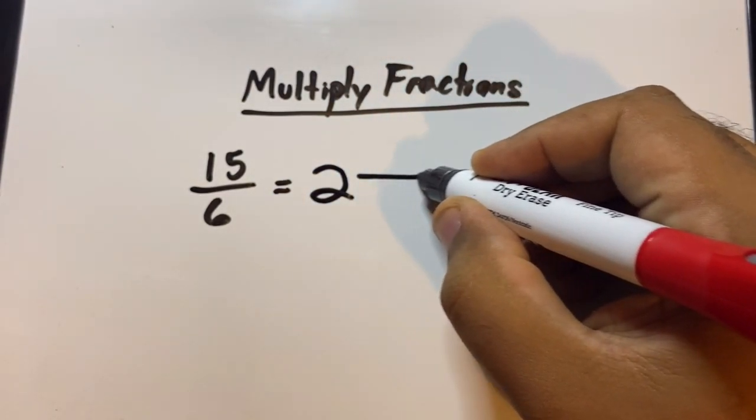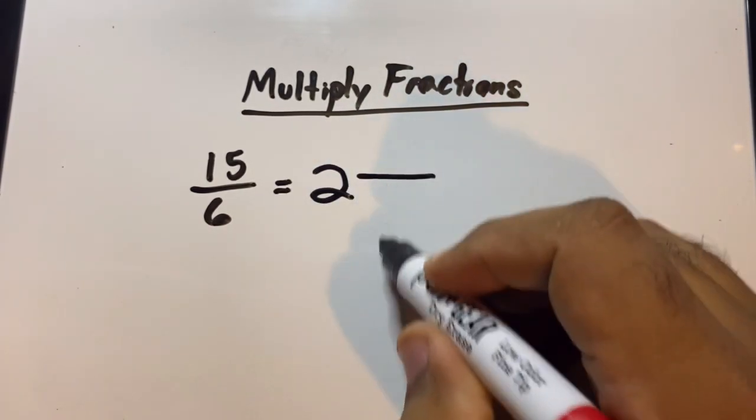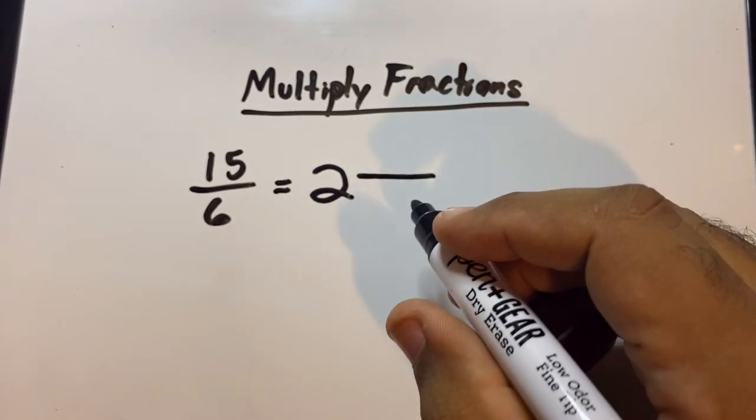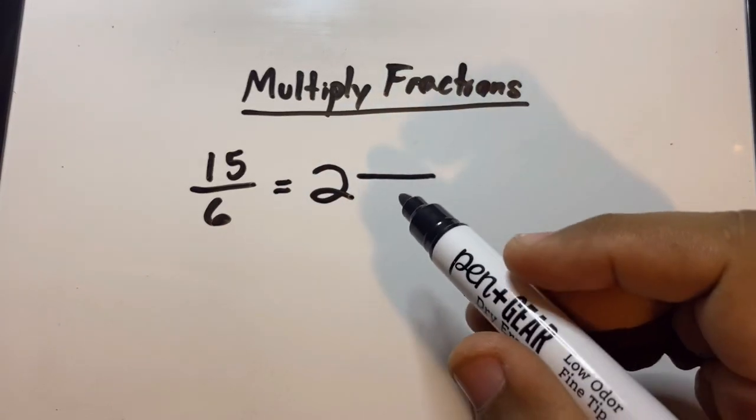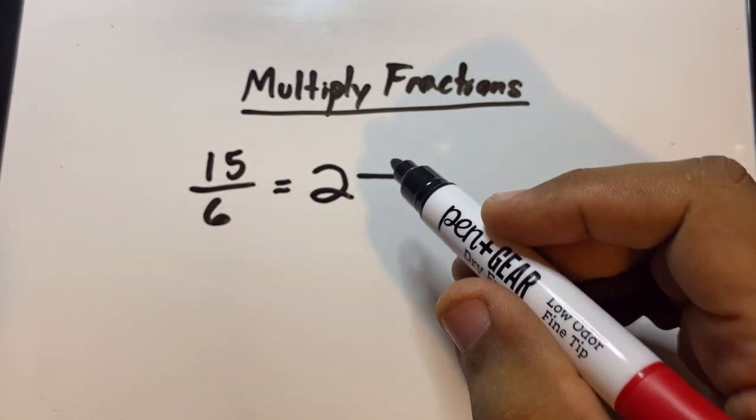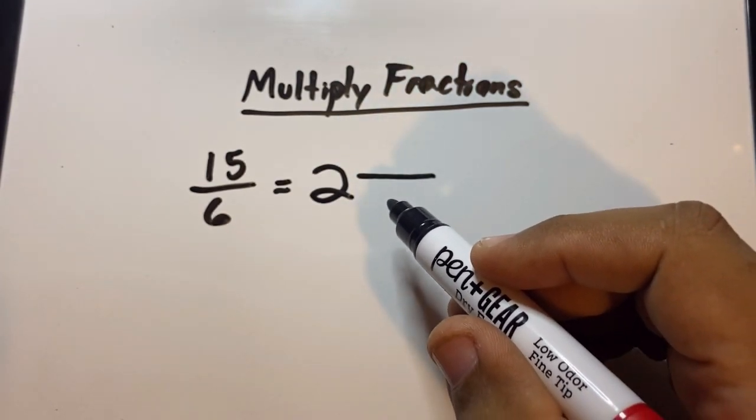When you're turning it into a mixed fraction, it has a whole number plus a regular fraction. In a mixed fraction, the number on the top has to be smaller than the one in the bottom.